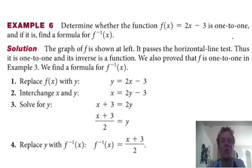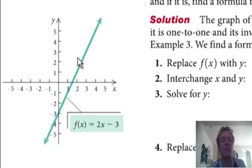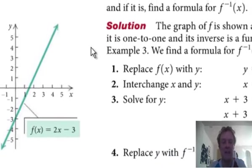Right, determine whether this function is one-to-one and then find its inverse. OK, so we can see it's one-to-one. It'll pass the horizontal line test.